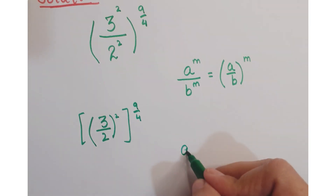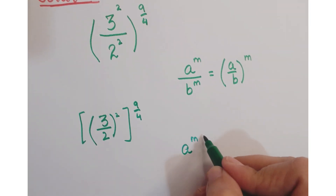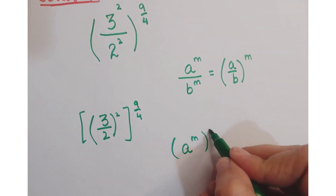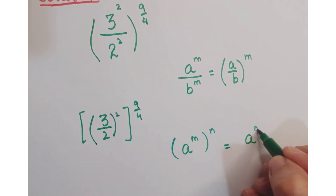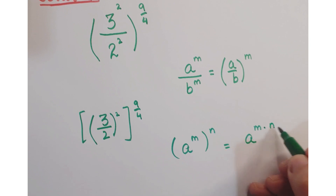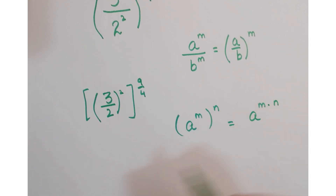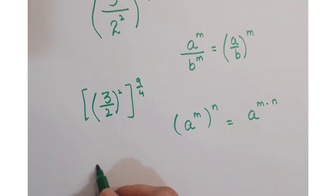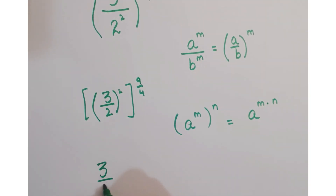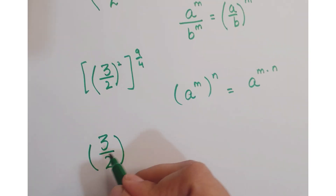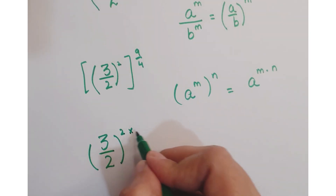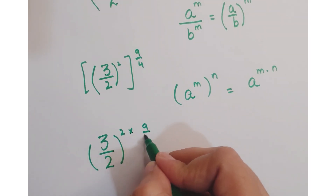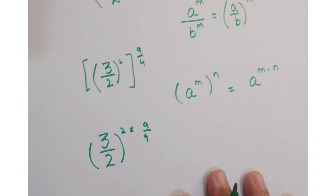Now, as you know that a to the power m, whole to the power n, can be written as a to the power m into n. So you can write it as 3 upon 2 whole to the power 2 into 9 upon 4.